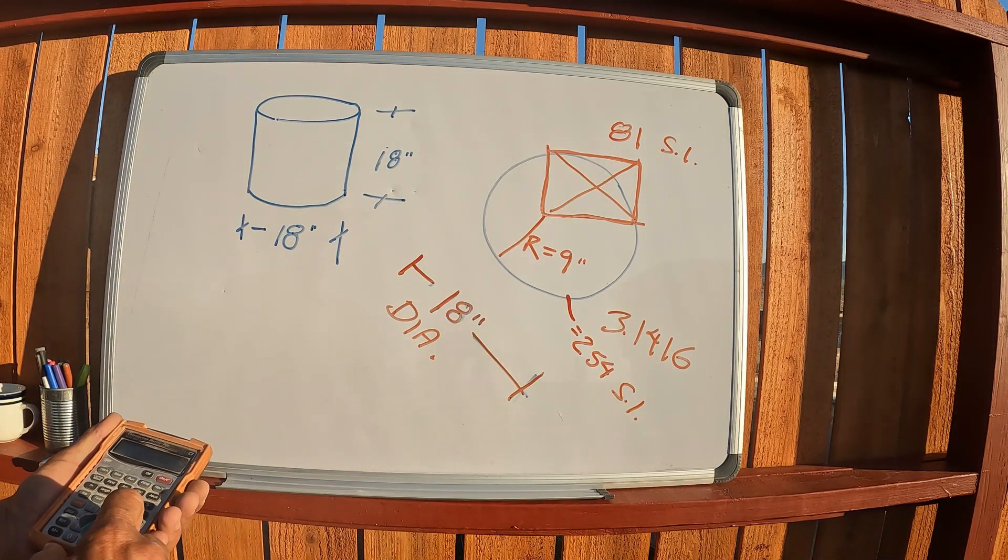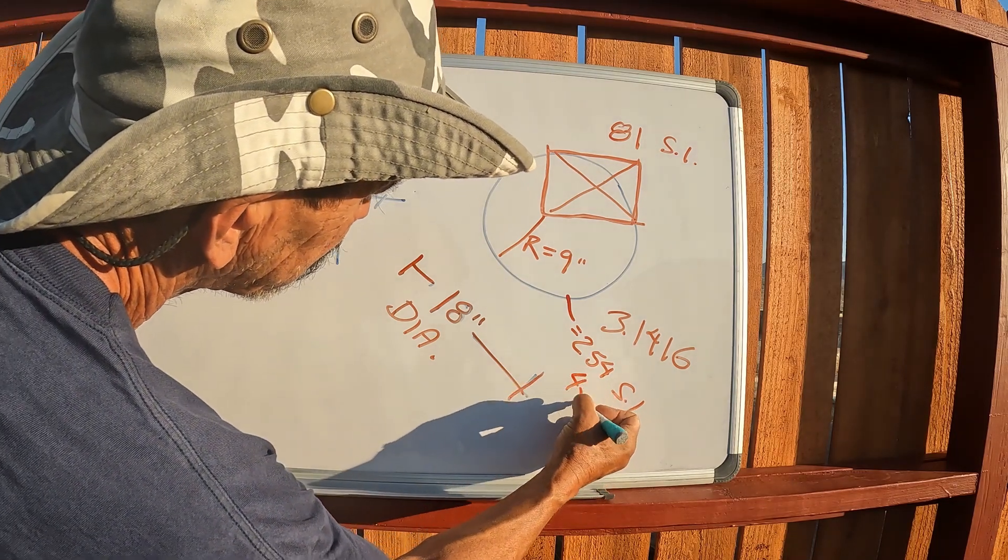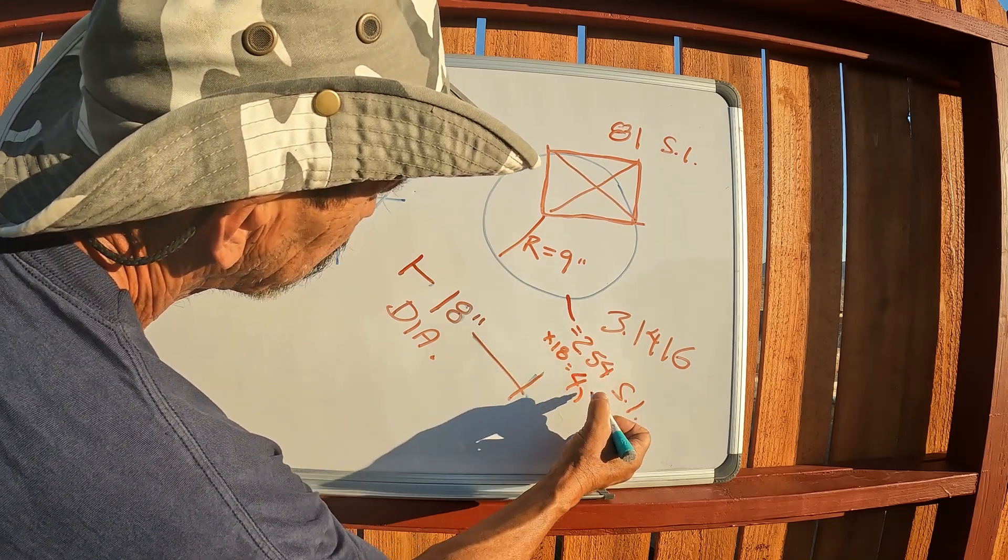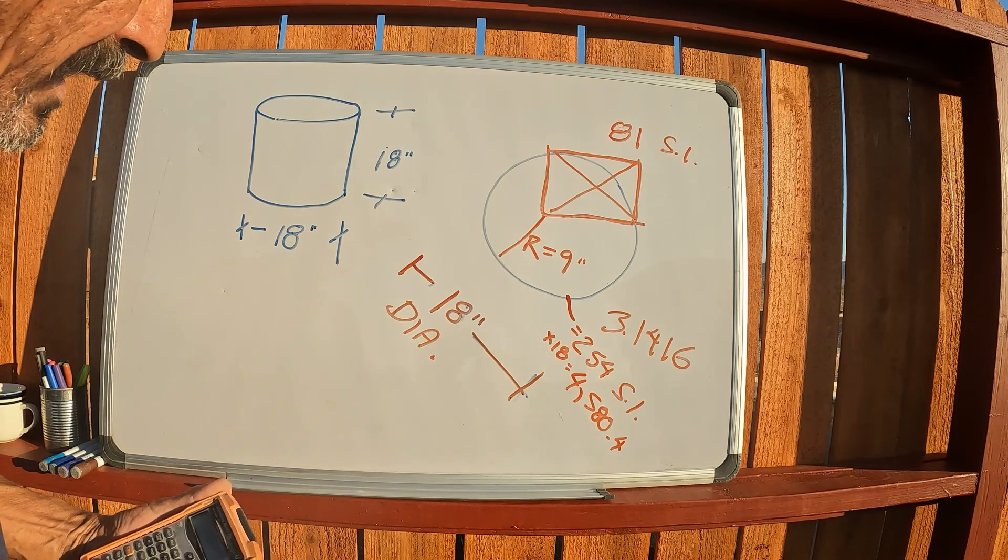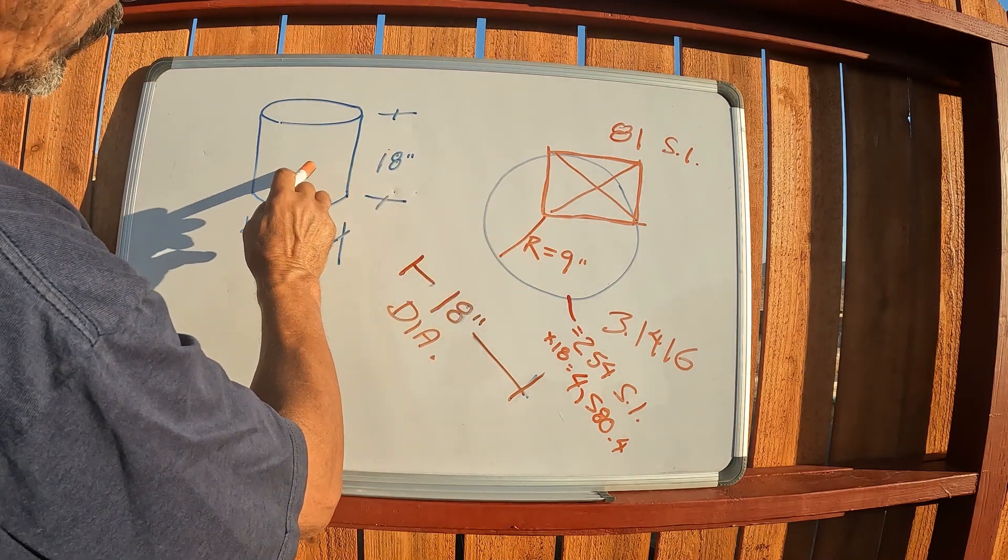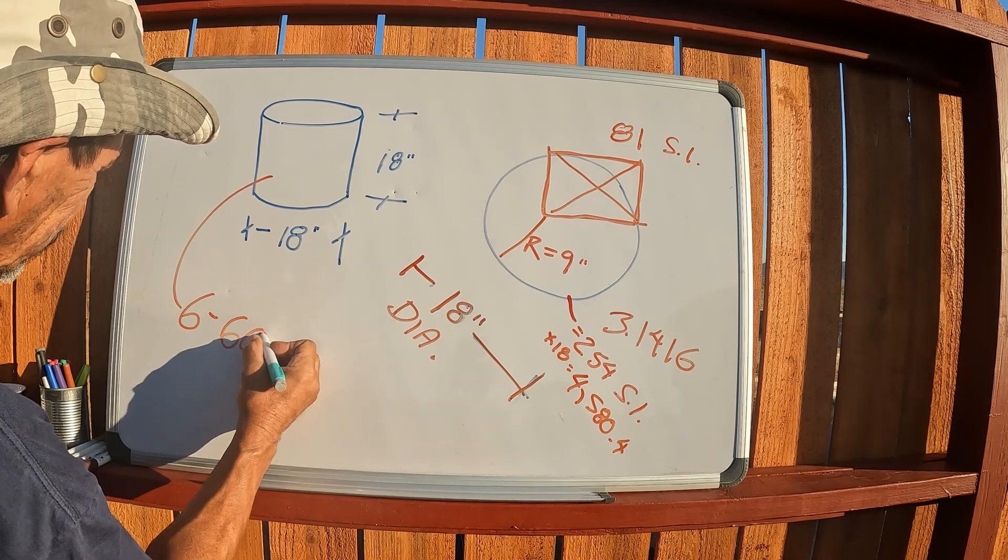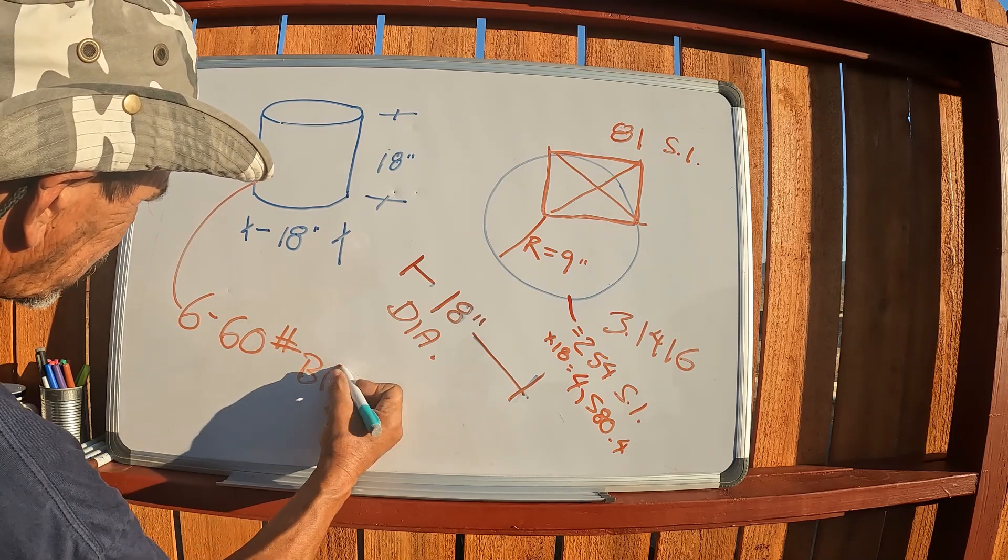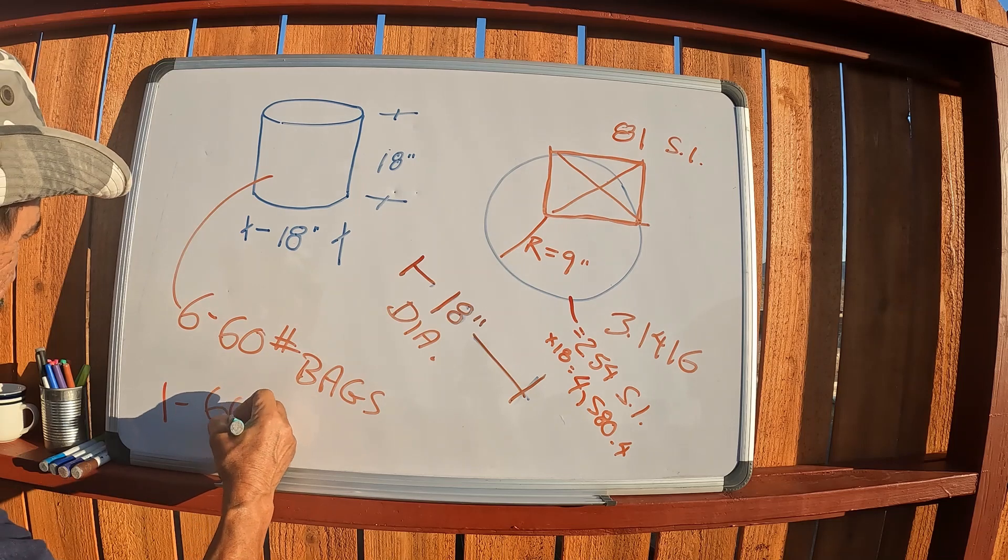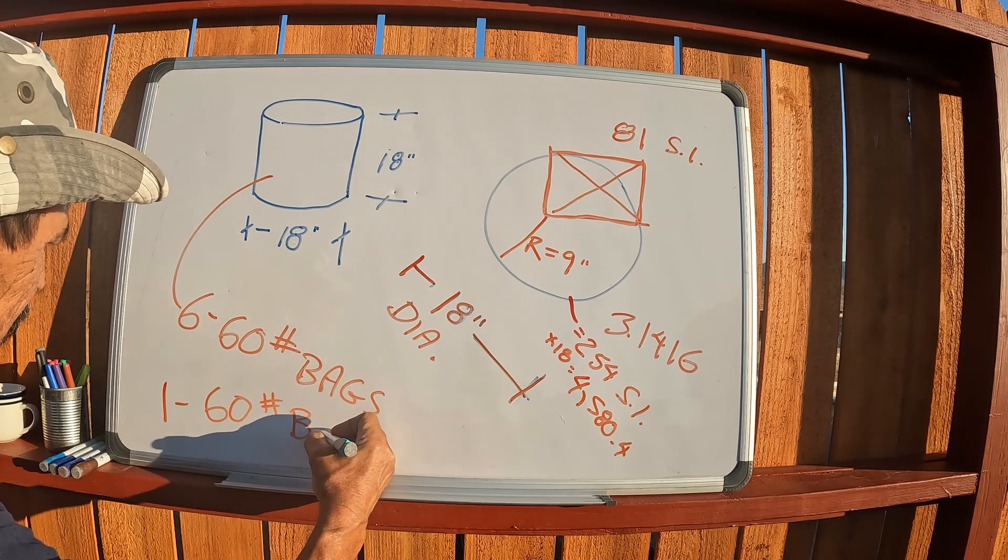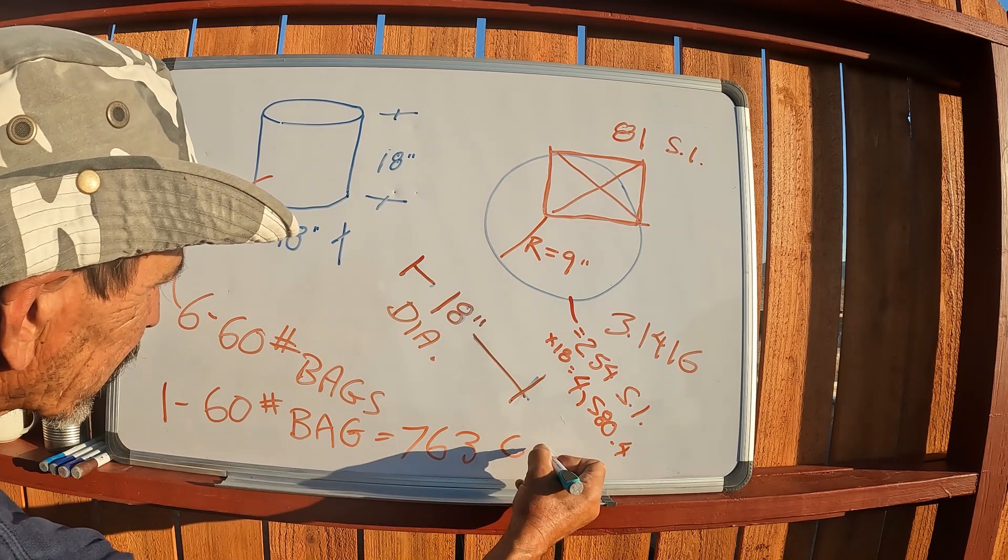Then multiply that by 18, gives you 4580.4. So it took six bags to fill this, six 60-pound bags. So each 60-pound bag, one 60-pound bag, and you can break it down from there, equals 763 cubic inches when it's finished out.